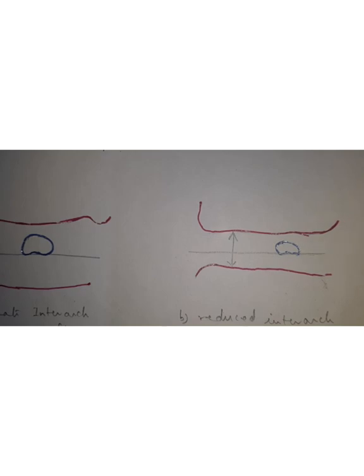We should always remember that the length of the maxillary first premolar should be comparable to that of the maxillary canine — the occlusal gingival height should be similar. If you change the height drastically when transitioning from canine to premolar, it will look very unaesthetic.